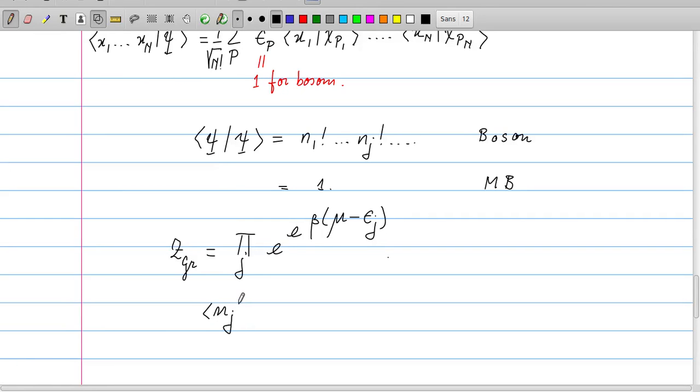Now if we want to know what the average occupation is of nj, then we can calculate simply the derivative of the logarithm of z grand with respect to beta epsilon j. It's easy to see that that is e to the power, and that should have a minus sign, e to the power beta mu minus epsilon j. That is a kind of ordinary Boltzmann factor, e to the power minus beta epsilon j.